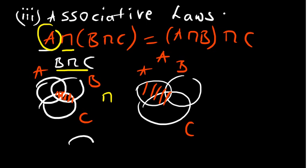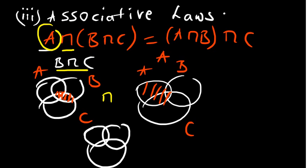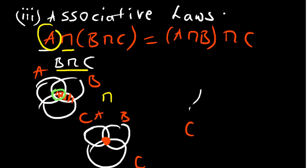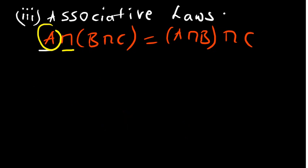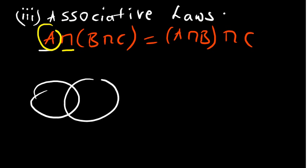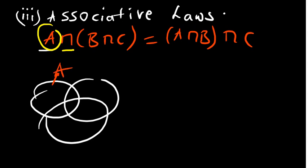When you look at the intersection of the two diagrams — B intersection C combined with A — the result is basically just the middle part, the region common to all three sets. So you have your A, your B, and your C, and it's this central region that is common to all three.